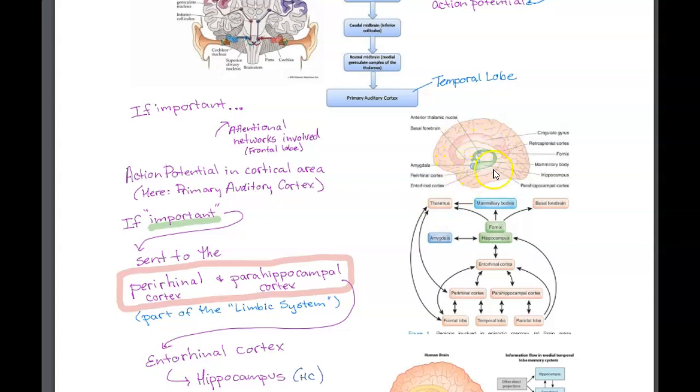This area is also called the limbic system, and the limbic system has those structures we know of, like the amygdala and the hippocampus, and some other areas. What we get is that sensory input, this time from the temporal area, from our temporal lobes, are going to get sent to these peri and para areas, these perirhinal and perihippocampal cortex, and then they send information on to the entorhinal cortex, which eventually gets sent to the hippocampus.